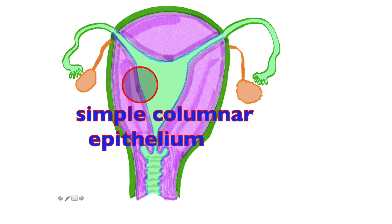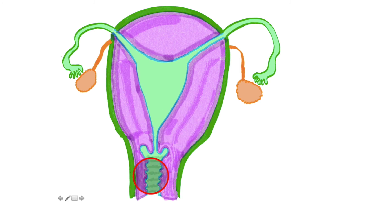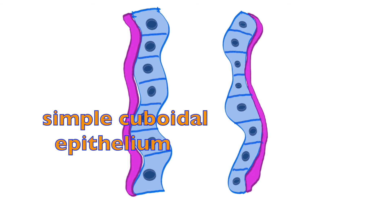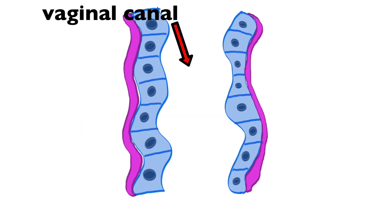When we look at the vagina down here, it is originally composed of simple cuboidal epithelial tissue. As you may notice by looking at this, these cells are fairly cuboidal in shape and not tall and elongated like we saw in the columnar.